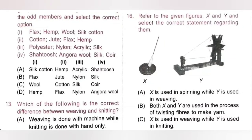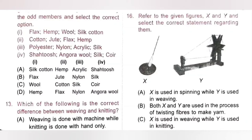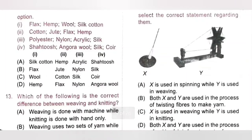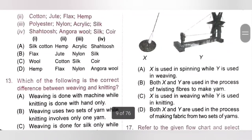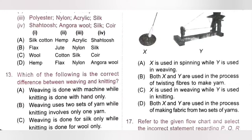Sixteenth question: In the figures, X represents takli and Y represents charkha. Both takli and charkha are used in spinning — the process of twisting fiber to make yarn. Option B is the correct answer.